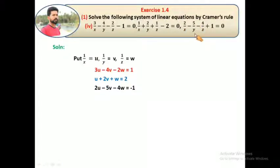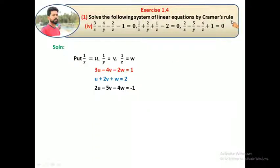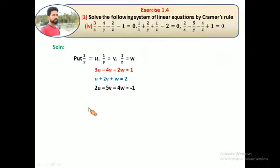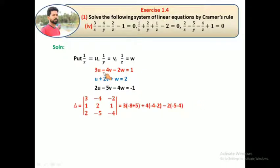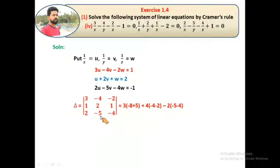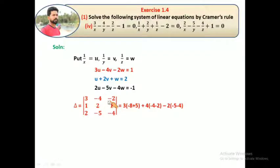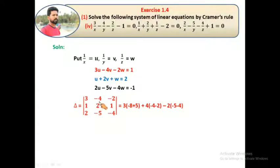The third equation is minus 5v minus 4w equal to plus 1. Now we have three equations. Using Cramer's rule, we find delta — the determinant of coefficients: 3, minus 4, minus 2; 1, 2, 1; 2, minus 5, minus 4. Expanding: 3 into (minus 8 plus 5) plus 4 into (minus 4 minus 2) minus 2 into (minus 5 minus 4).